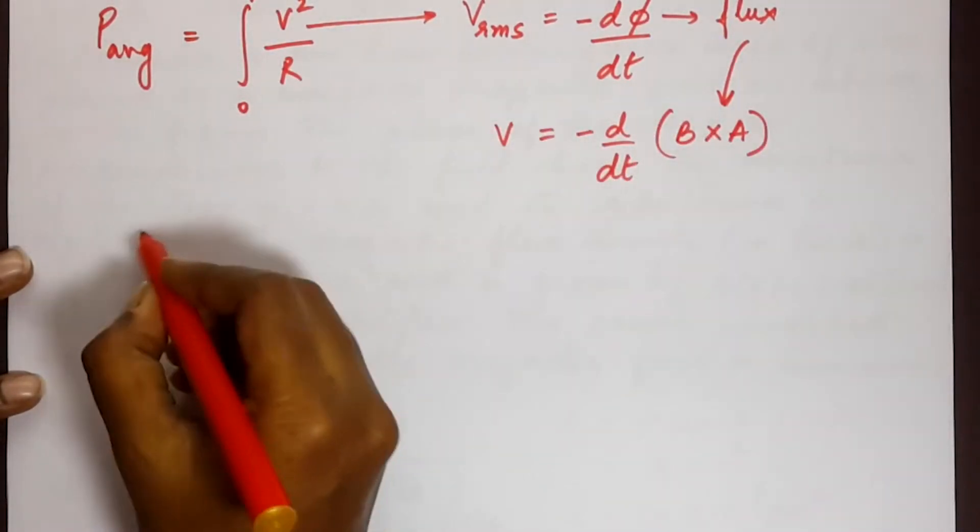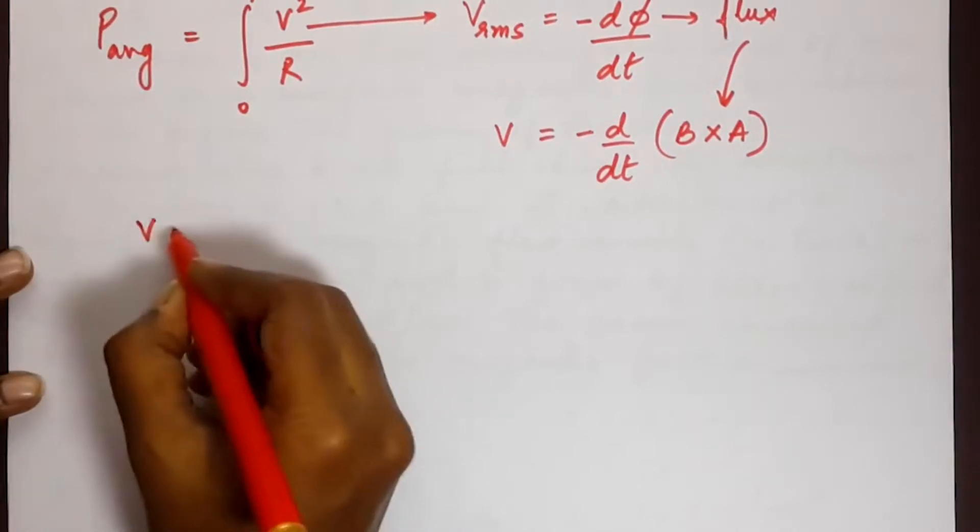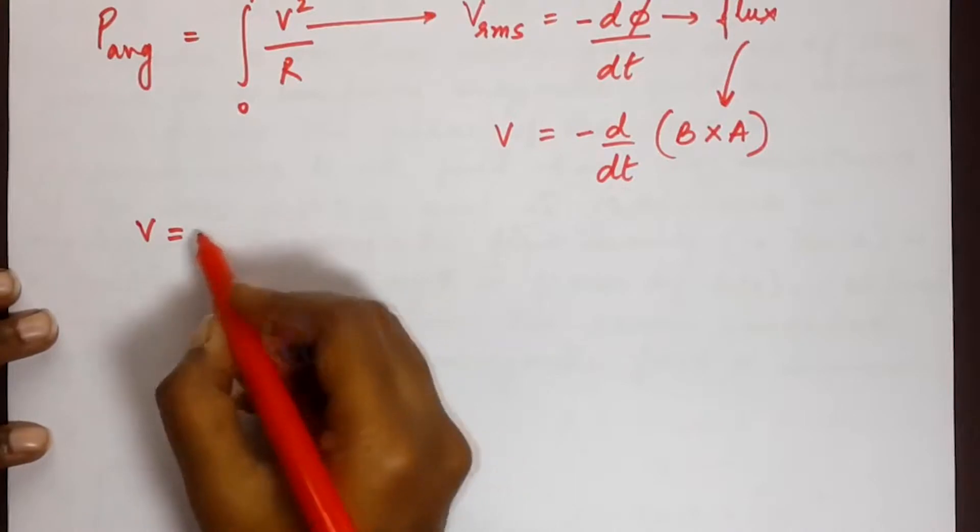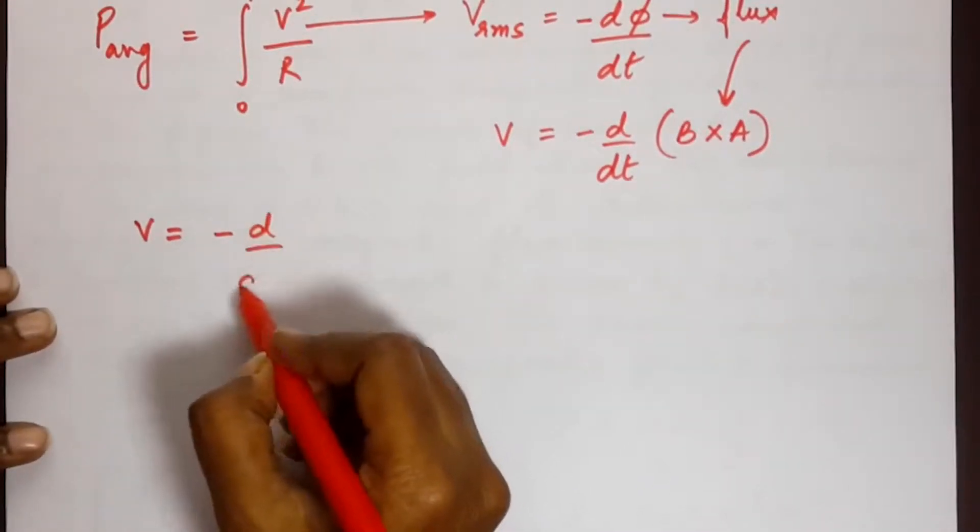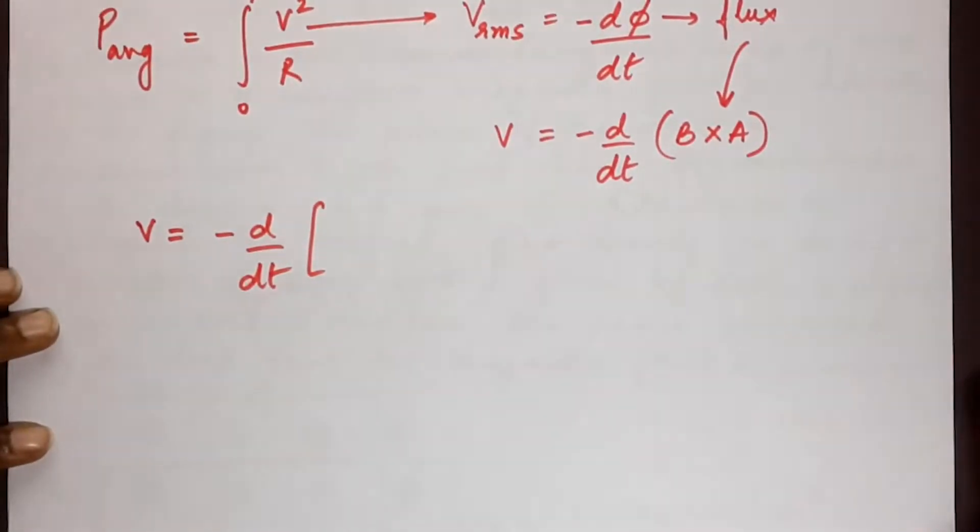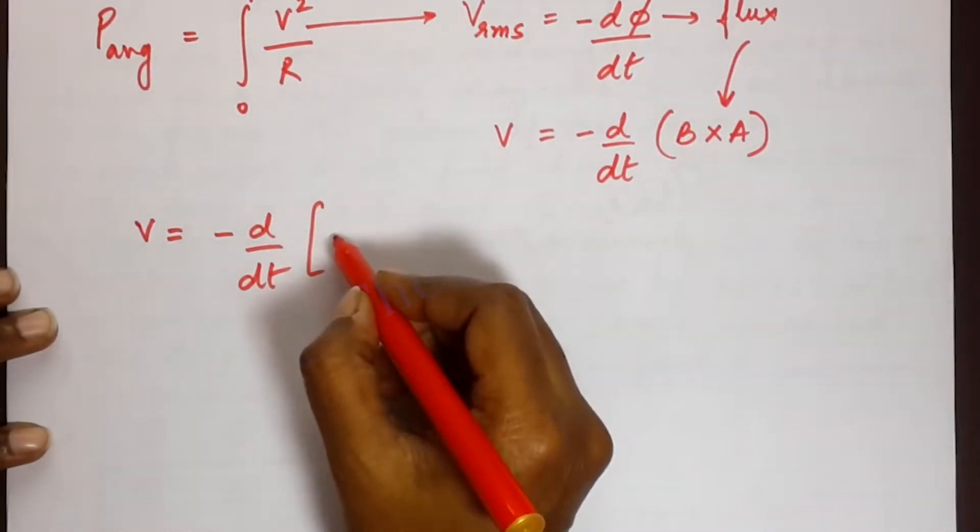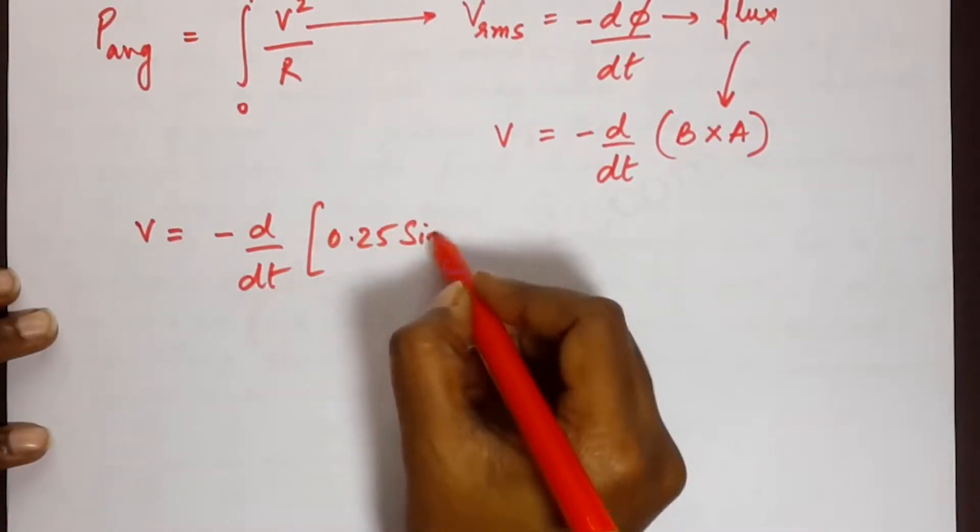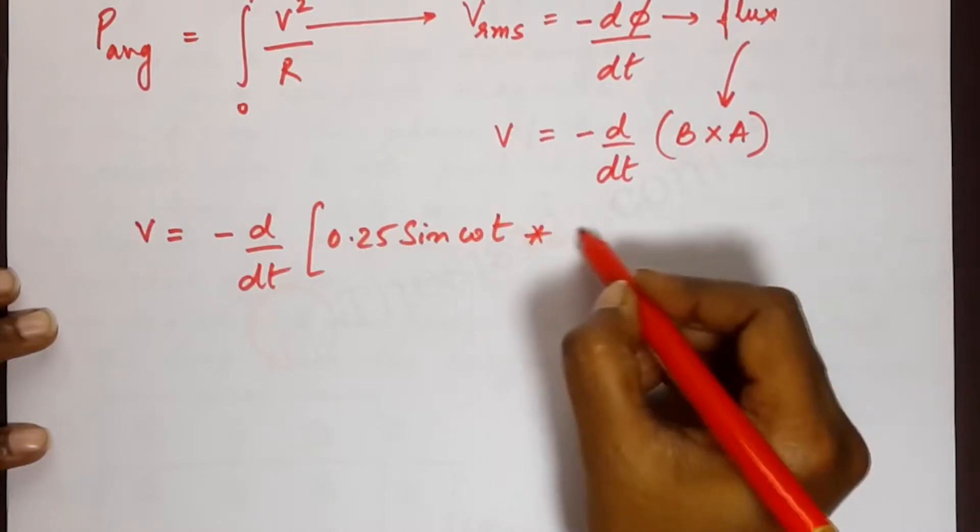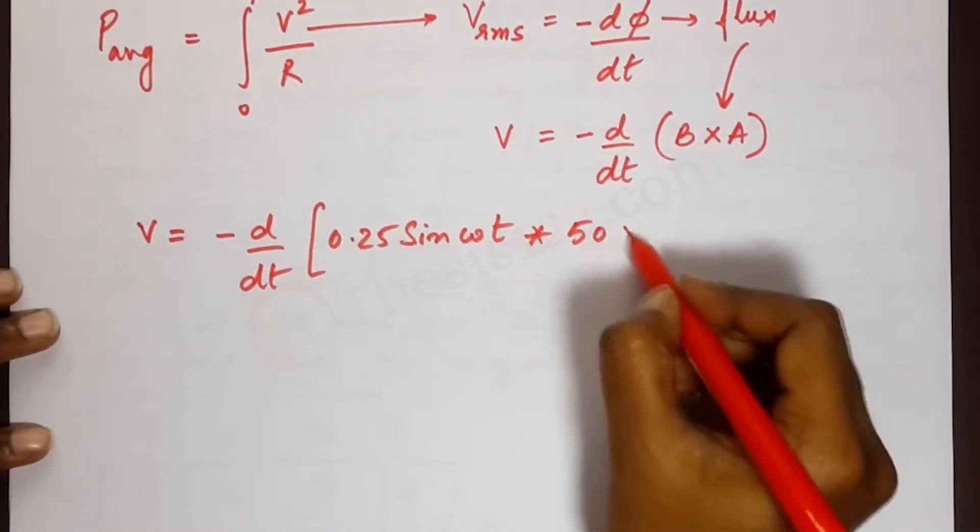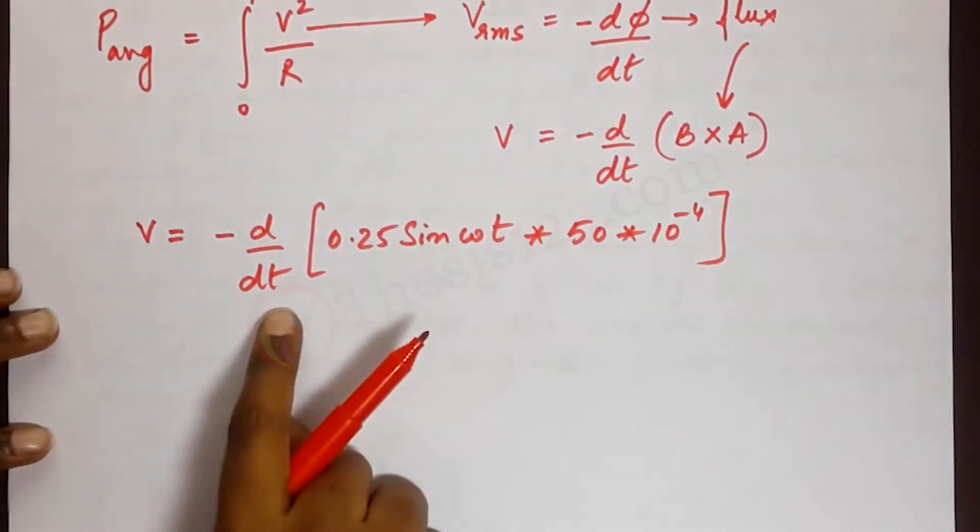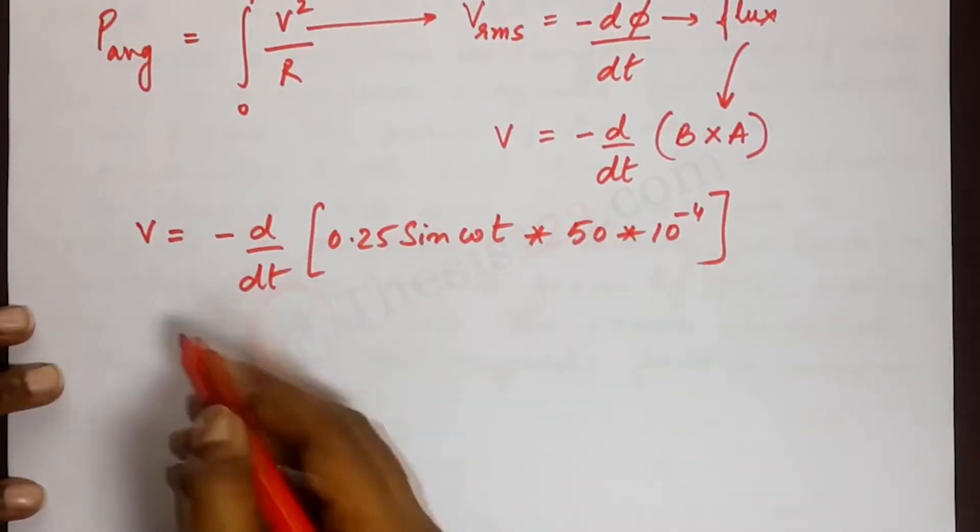Now let's substitute. We'll find out what v is first in order to plug it into the power equation. So we have v is equal to minus d by dt of b. So v is an expression. We have it in terms of 0.25 sin omega t into area, so area is 50 into 10 power minus 4. Now we need to differentiate this entire expression.